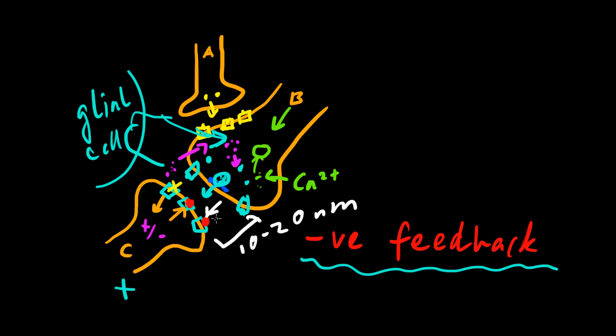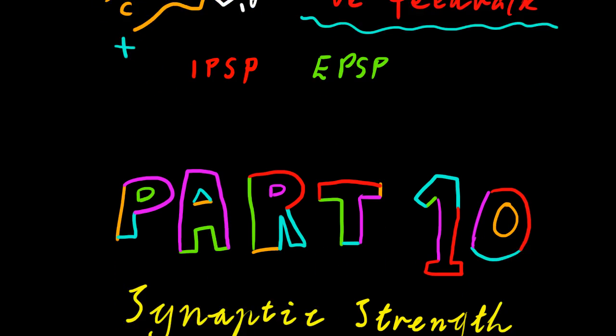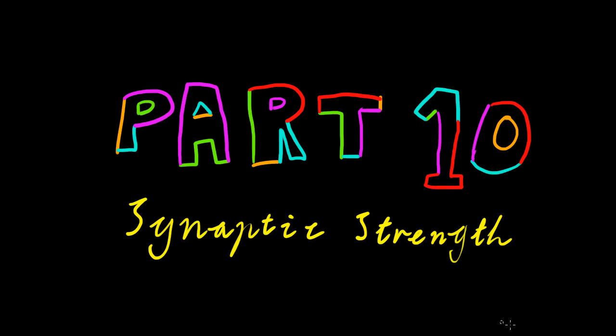So I hope this helps you appreciate that there are a lot of things which can influence the impact, influence the amount of influence that an IPSP or an EPSP can have on the post-synaptic neuron. And yeah, I hope this has been helpful. It's been part 10, Synaptic Strength. Thank you.